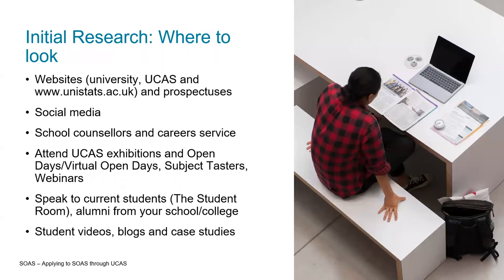In terms of initial research and where to look, you can look at universities' own websites. You can look at UCAS — that's a great website for getting an overview of lots of different universities. You can also build a shortlist on UCAS by selecting which programme you're looking to apply to, and it will provide you with all of the universities that offer that programme.